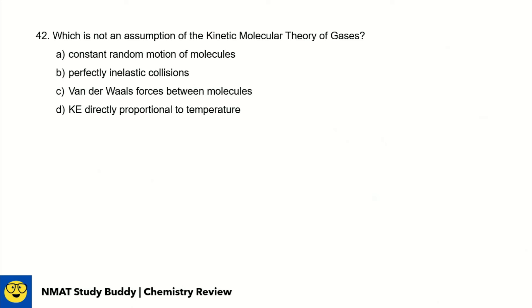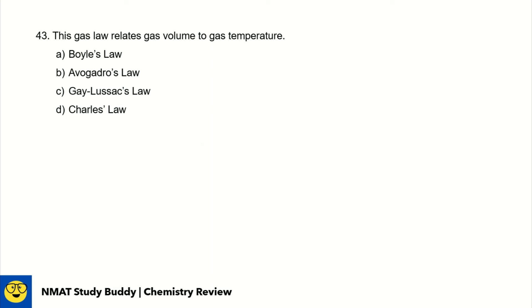Number 42, which is not an assumption of the kinetic molecular theory of gases? The kinetic molecular theory gives us a visualization of how gases behave in their ideal form. In the ideal or perfect gas form, there are no van der Waals forces or intermolecular forces between molecules. The kinetic molecular theory states that temperature is a measure of the kinetic energy of all gas molecules, and collisions among gas molecules are perfectly elastic. And of course, their motion is constant and random. Number 43, this gas law relates volume to gas temperature. This is Charles law, which tells us that when temperature increases or the gas sample heats up, the volume also increases.